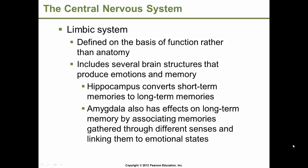The hippocampus converts short-term memories to long-term memories. The amygdala also has effects on long-term memory by associating memories gathered through different senses and linking them to emotions, such as the olfactory, which transmits information about odors to the limbic system. Olfaction is the major sense that brings up emotions.